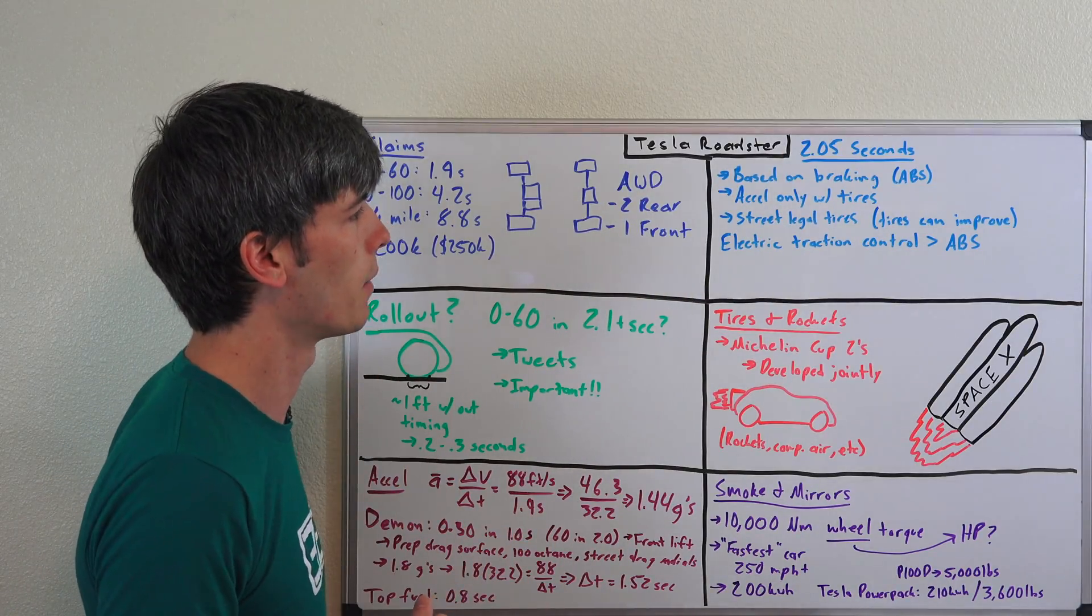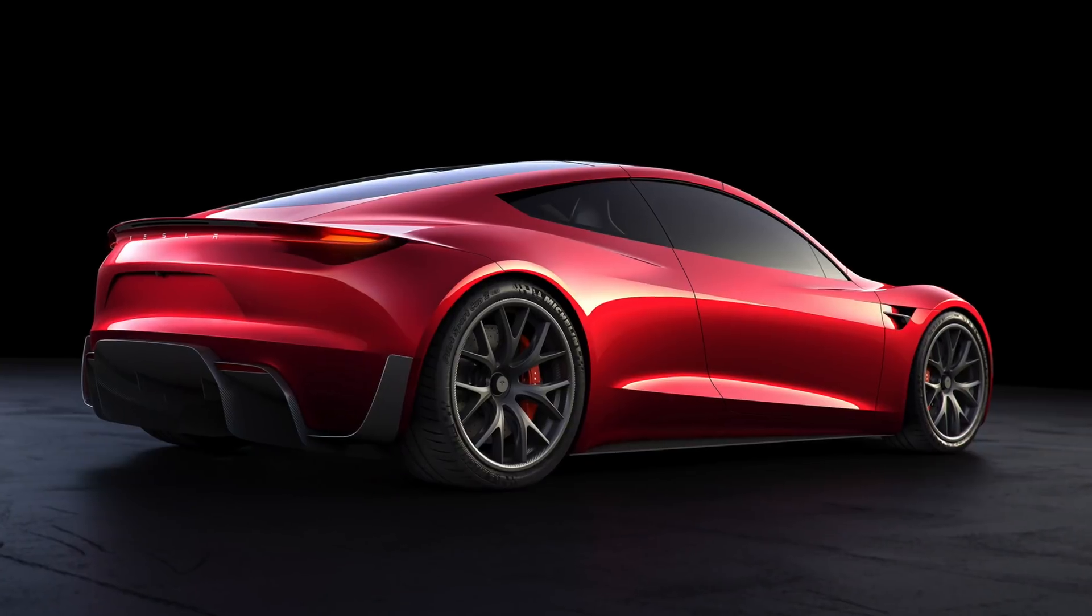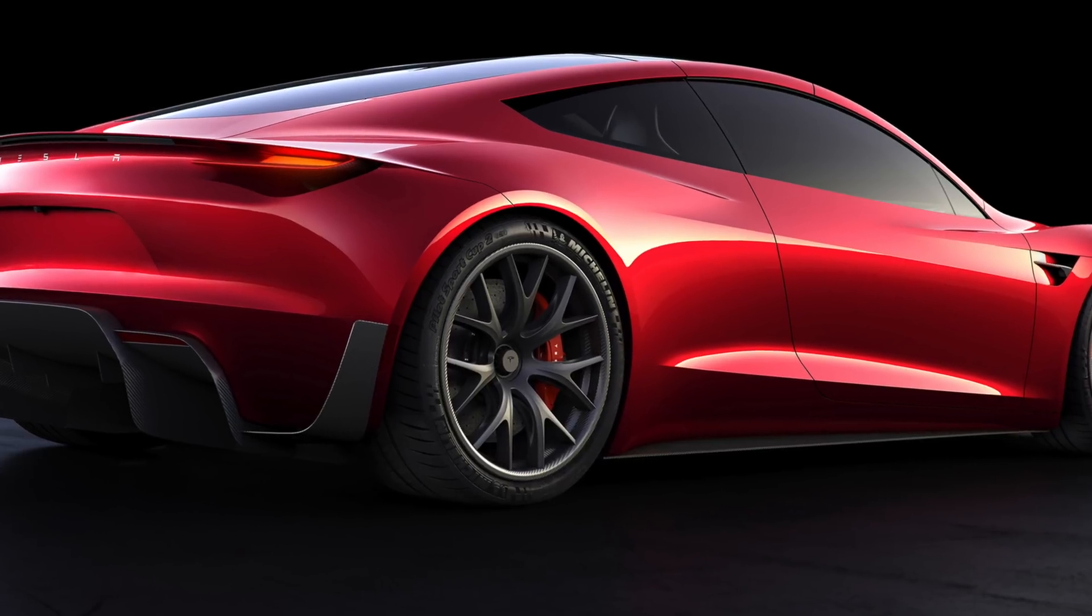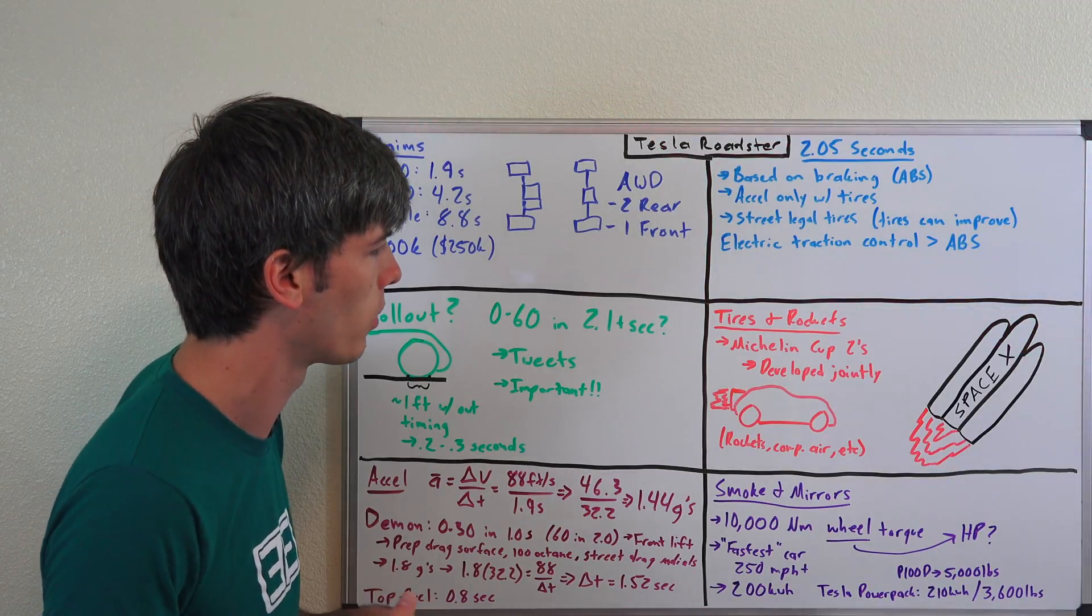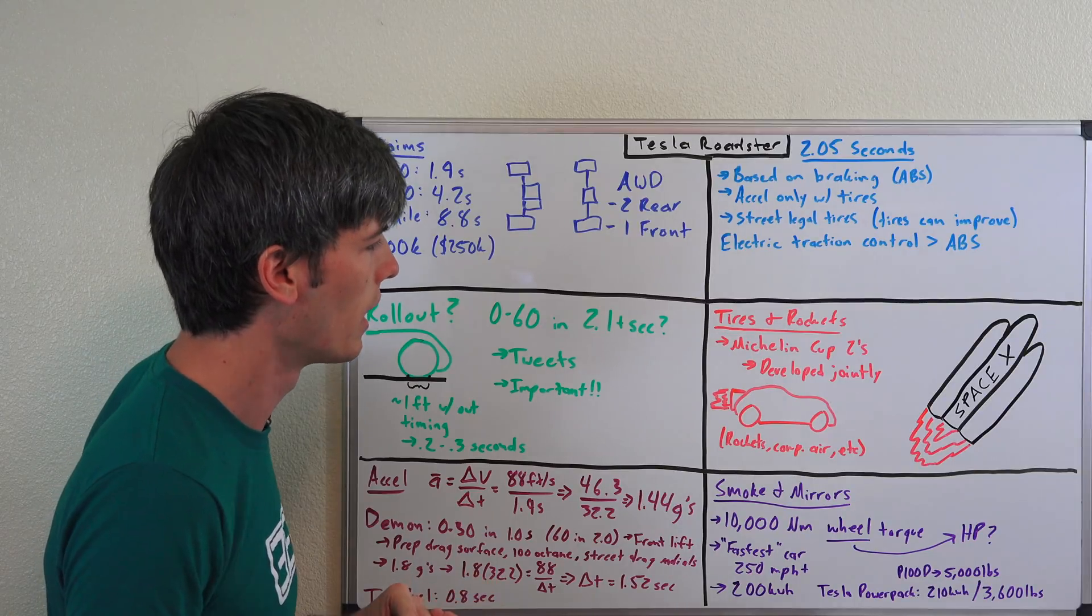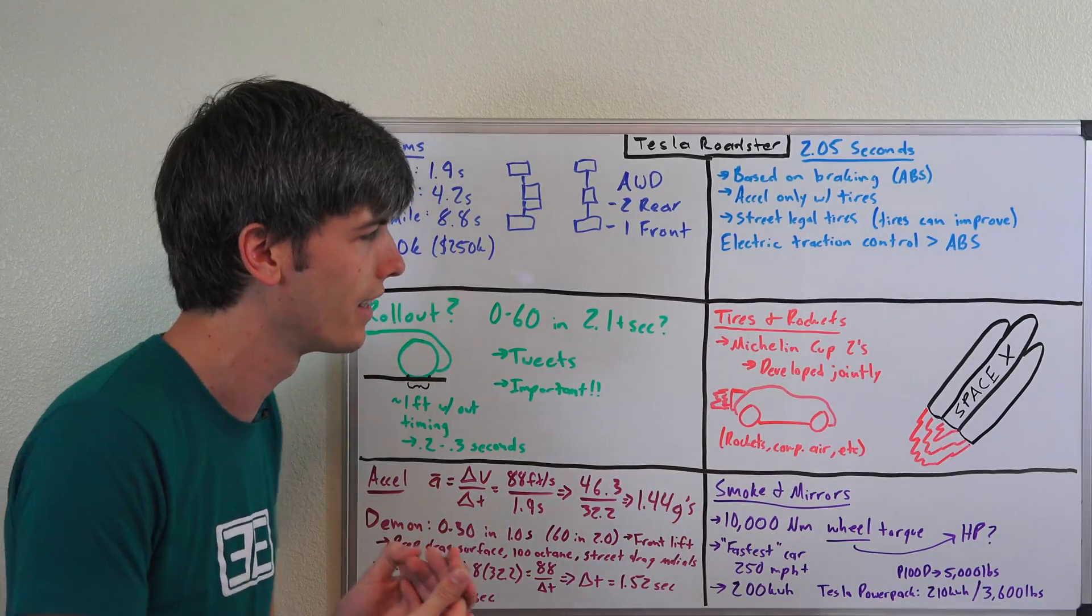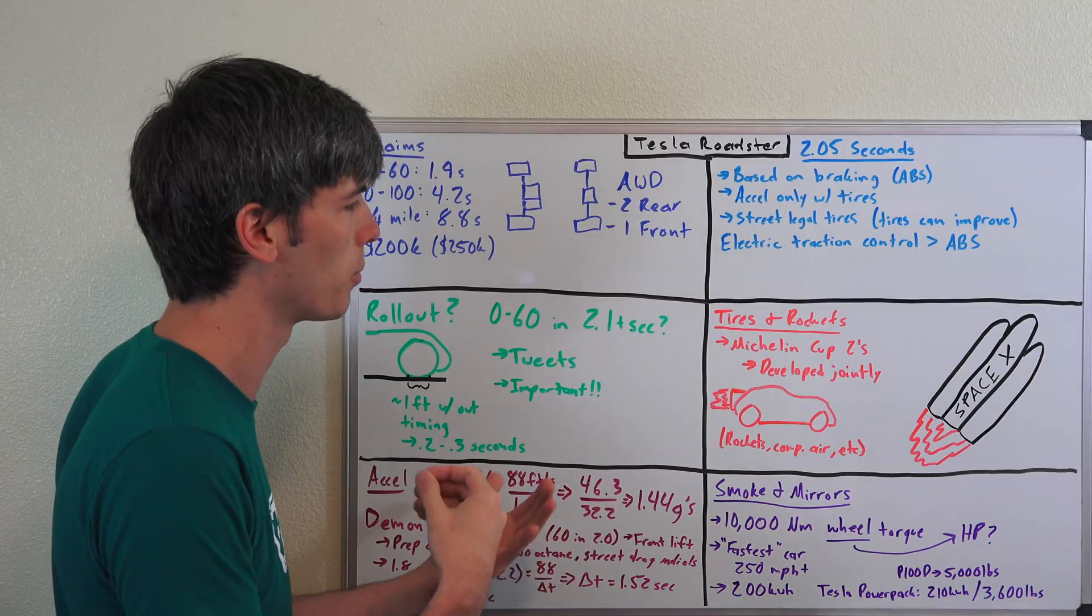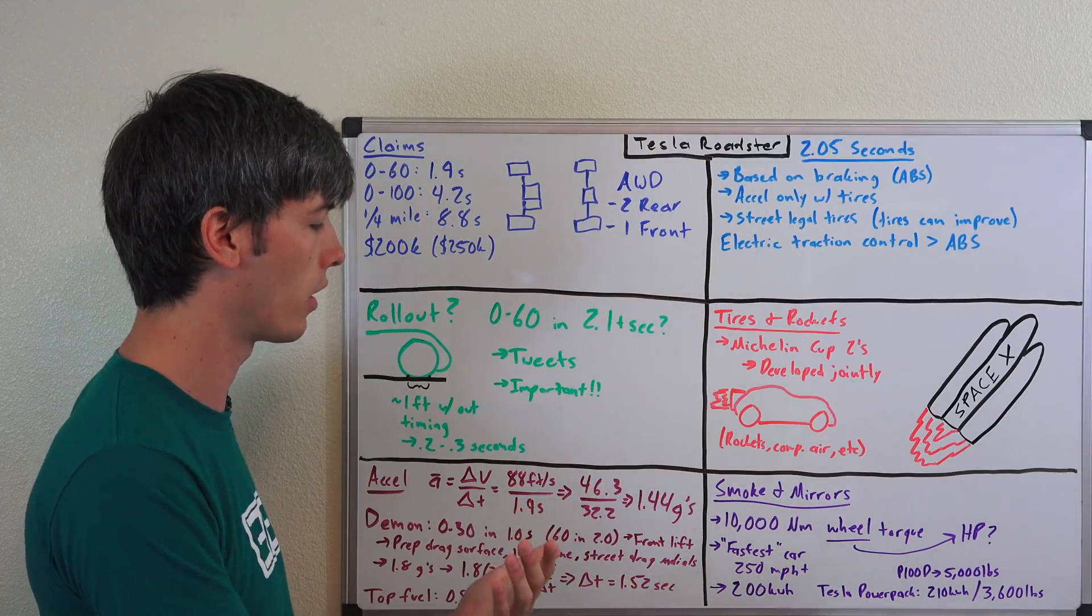Now on the Tesla Roadster, the tires it's using are Michelin Cup 2s, and they are basically the grippiest tires you're going to find out there on the market for street legal tires. Perhaps the Nitto drag radials are equally capable in a straight line, but these Cup 2s are basically just fantastic in the dry. They're going to have tons of grip. And one of the things to keep in mind is that companies work side by side when developing tires for cars. So Tesla may have reached out to Michelin and said hey, let's make the grippiest Cup 2 you have for this car for this specific scenario, and they kind of collaborate on it.